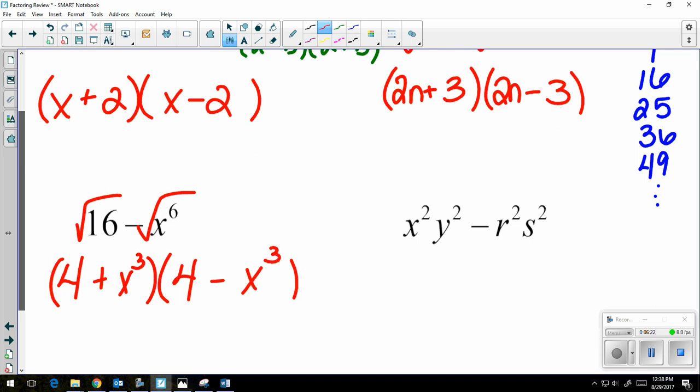And then lastly, I have x squared y squared minus r squared s squared. One plus, one minus. Square root each piece. xy goes in the beginning of each parentheses. rs goes in the second spot. And that is DOTS, or difference of perfect squares.